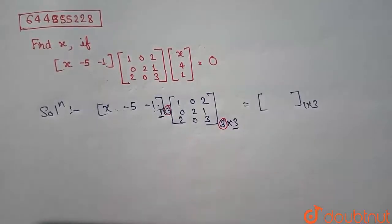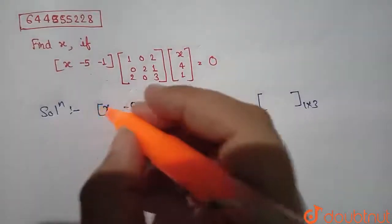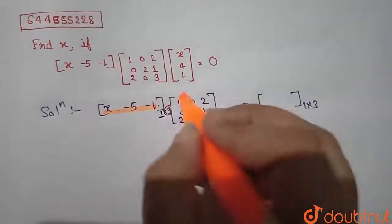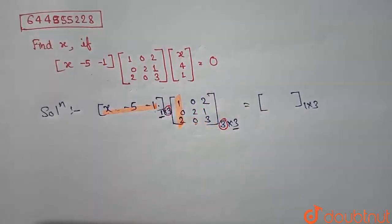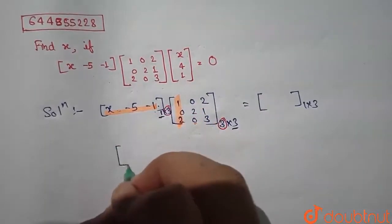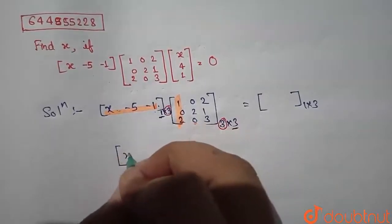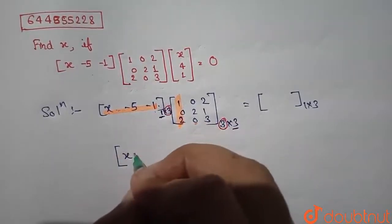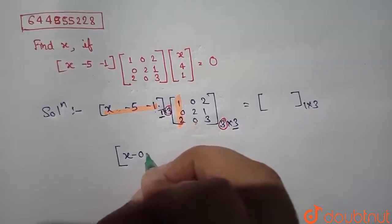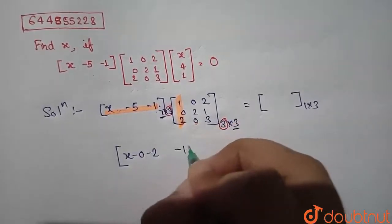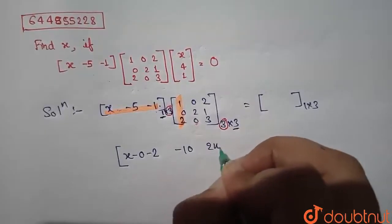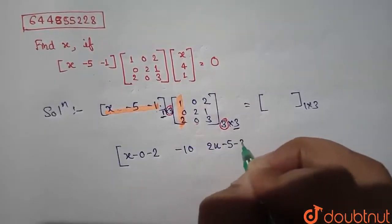Now to multiply matrices we have to consider this way to this way, then this and this. Now we will write it as [x-0-2, -10, 2x-5-3].